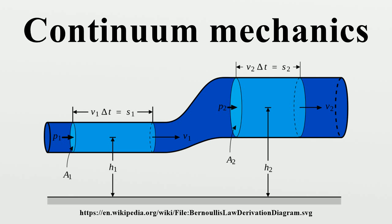Modeling an object as a continuum assumes that the substance of the object completely fills the space it occupies. Modeling objects in this way ignores the fact that matter is made of atoms, and so is not continuous.